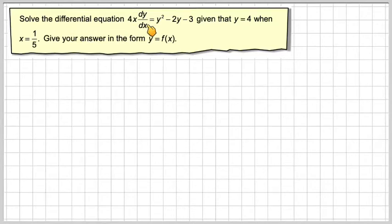Solve the differential equation 4x dy/dx = y² - 2y - 3, given that y = 4 when x = 1/5. Give your answer in the form y = f(x).